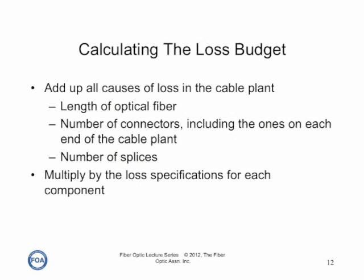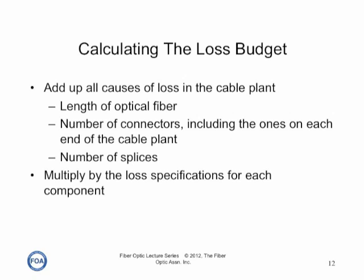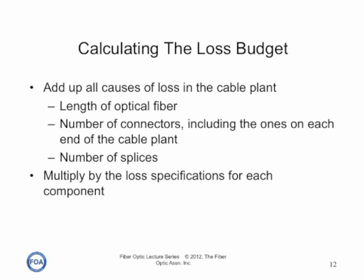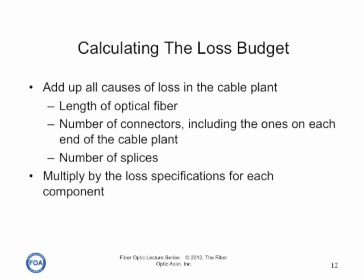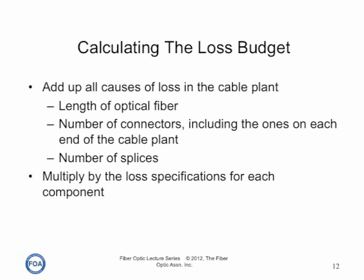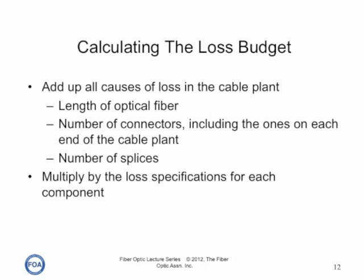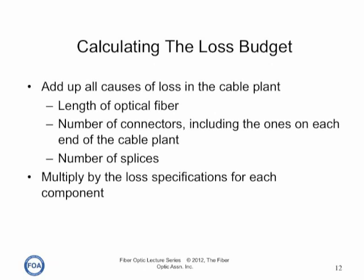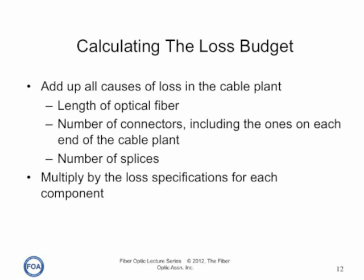Calculating the loss budget is straightforward. We add up all the causes of loss in the cable plant: the length of optical fiber times its attenuation coefficient in dB per kilometer, the number of connectors — including the ones on each end of the cable plant — times the average loss of a connector, and the number of splices times the average loss of the splice. Some people question whether to include the connectors on either end of the cable plant, but the definition of cable plant loss includes those connectors because very often we're measuring a permanently installed cable plant that will be connected to transmitters and receivers by patch cords.